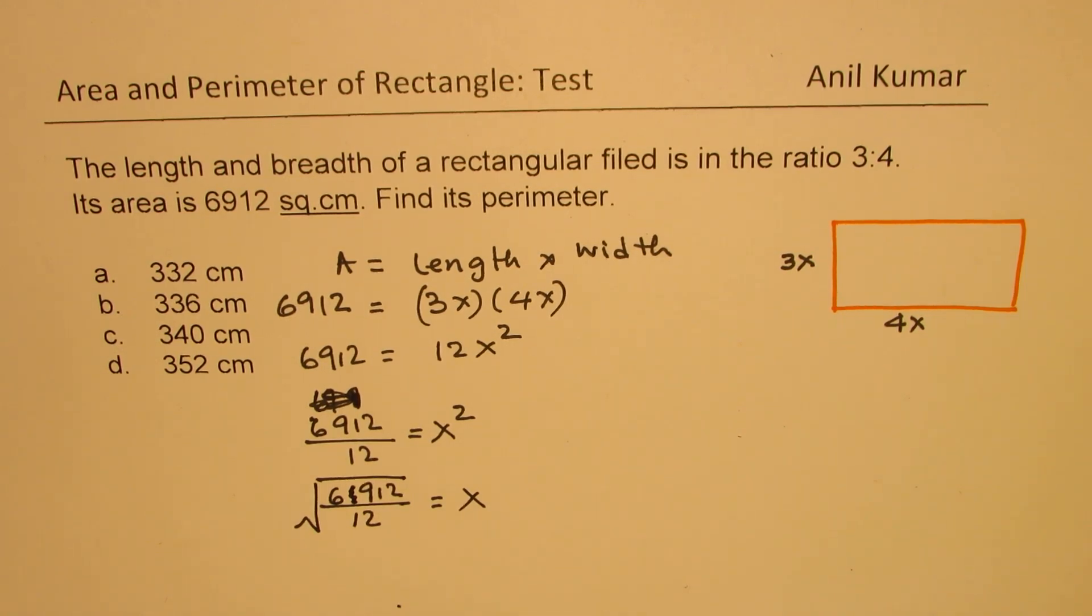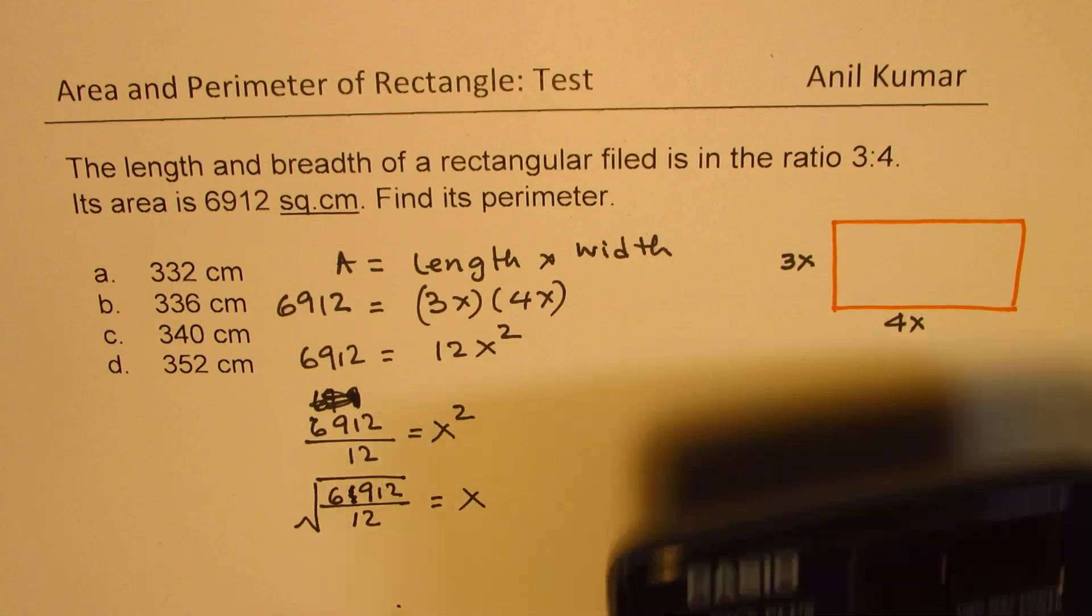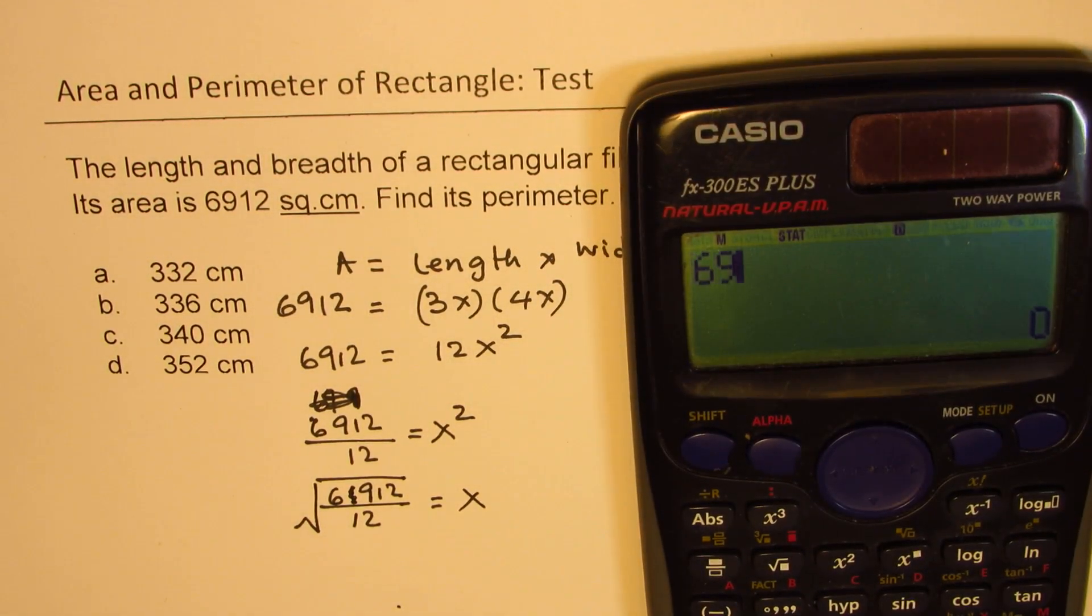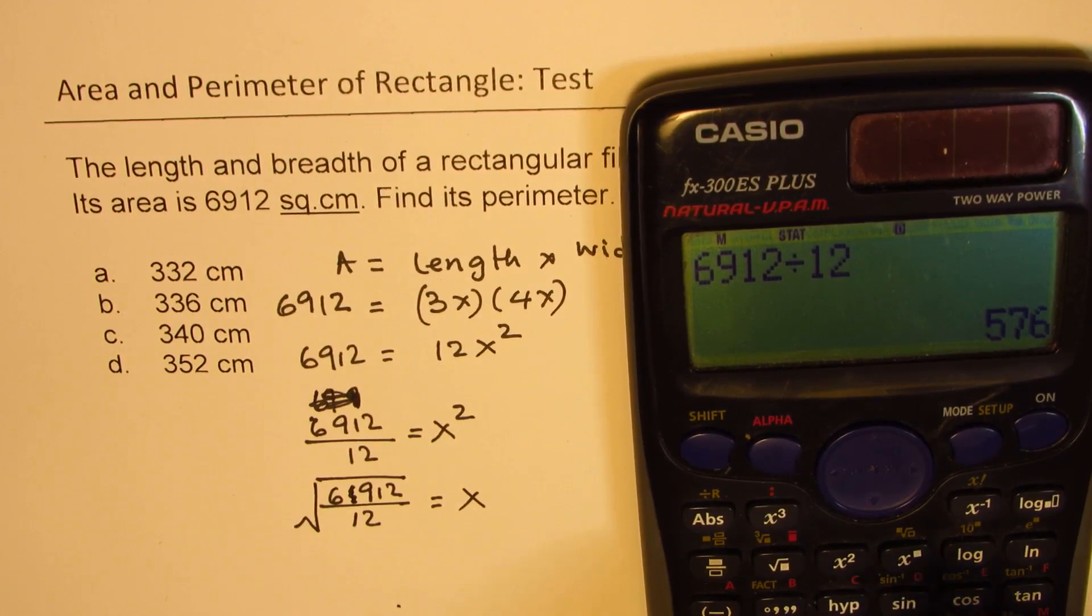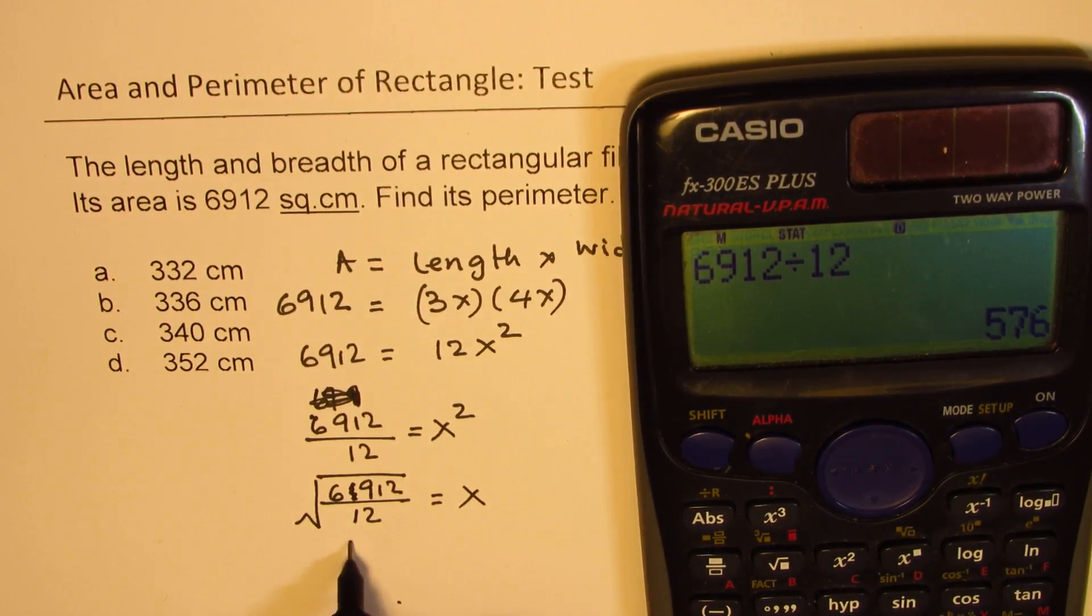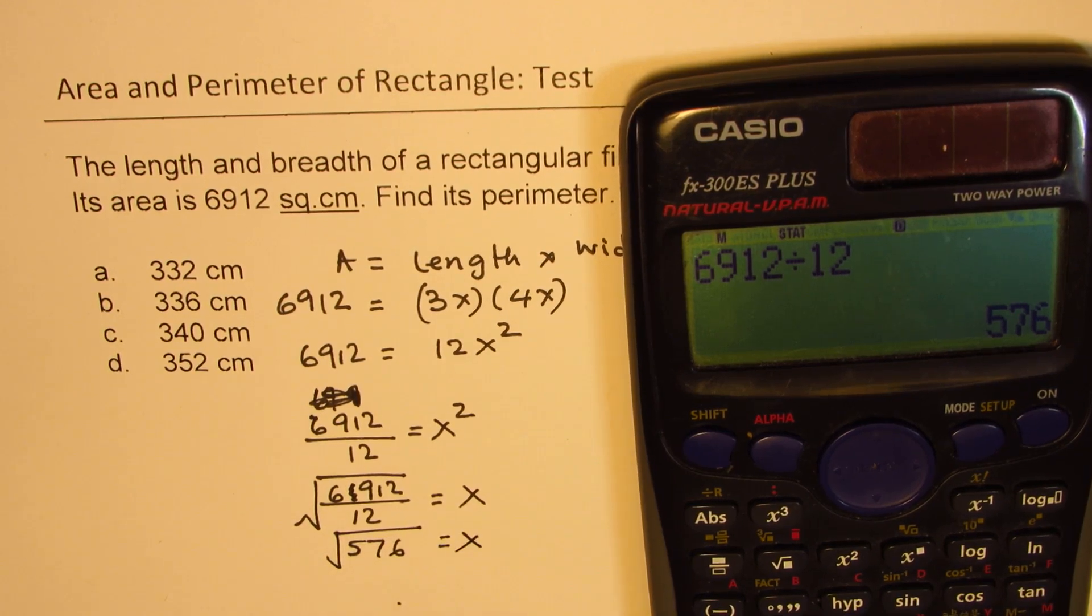So now we can use calculator to calculate this value. You can also divide by 12 and figure out. So we have 6912 divided by 12, which is 576, square root is x. Square root of our answer is equal to 24. So we get 24 is the value of x.